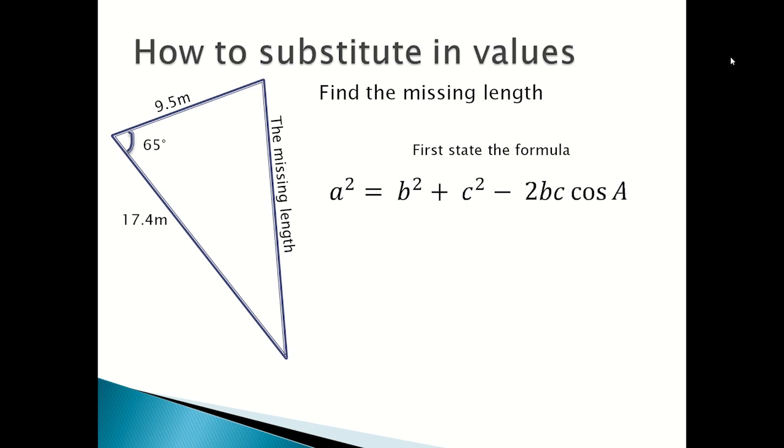First you would state your formula. You always get a mark for stating your formula, which is A squared equals B squared plus C squared minus 2BC cos A. Then you substitute in values. So A squared will equal to 9.5 squared plus 17.4 squared minus 2 times 9.5 times 17.4 times cos 65.